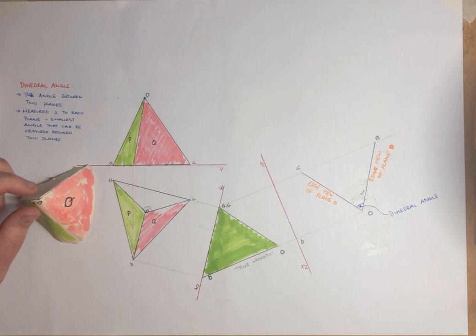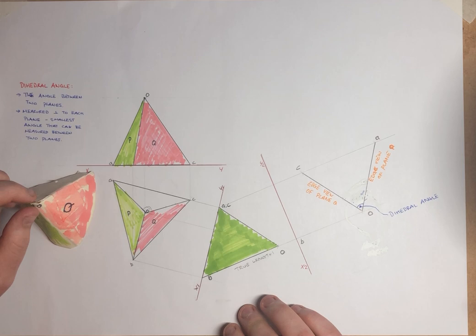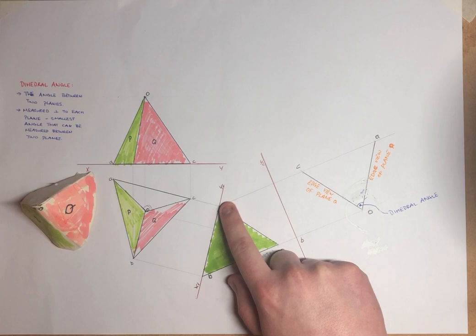Just when we have our line of intersection, we want to get our true length of that line. So we know how to get our true length. We're going to get our X1, Y1 line. It's going to be parallel to our OB, our line of intersection.